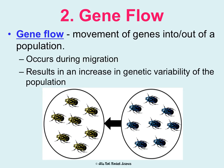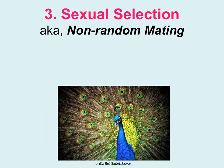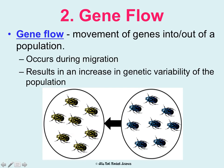Gene flow results in an increase in genetic variability in a population. So if we have an island with only yellow beetles and another island with only blue beetles, and some beetles make their way over to the first island, we've now introduced genes for blue beetles, and that'll start changing this population of beetles. This is microevolution — small scale, not affecting beetles all over the world, just the beetles on this specific island and this specific population.